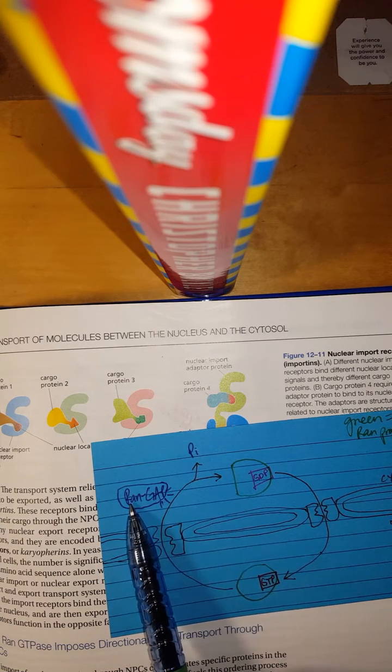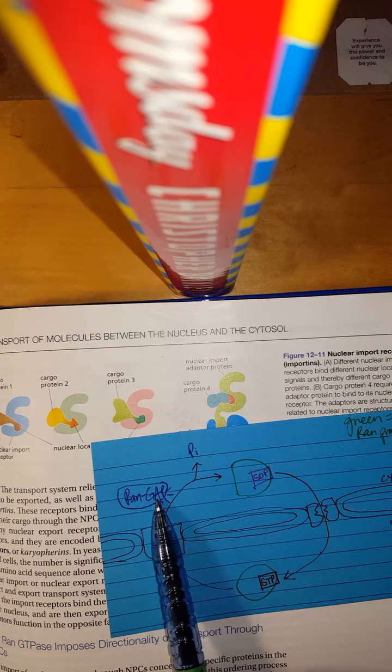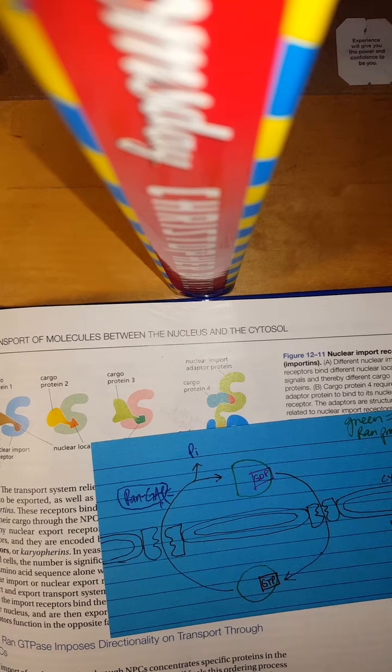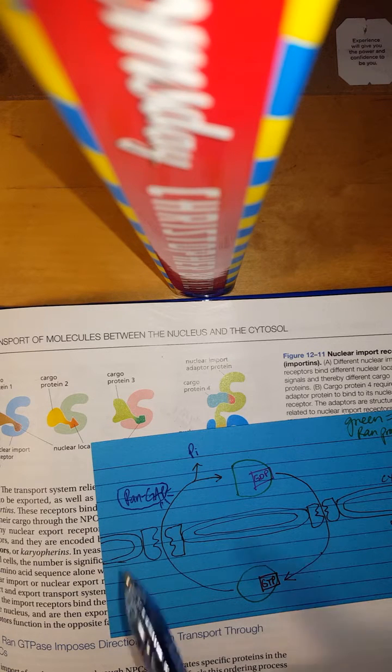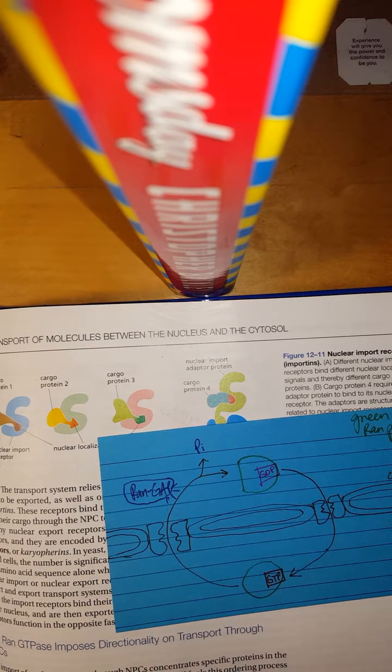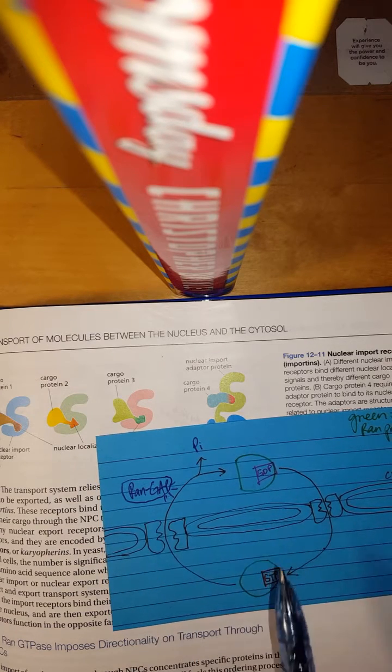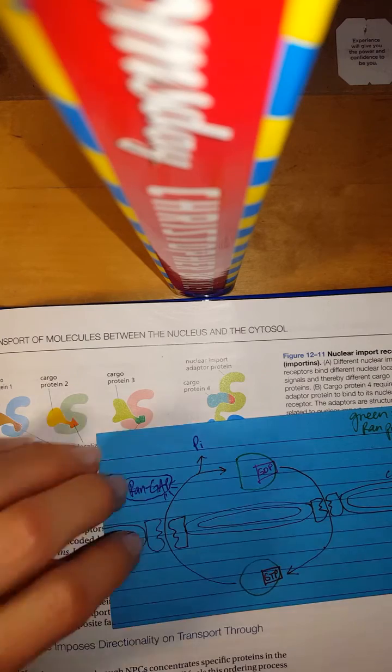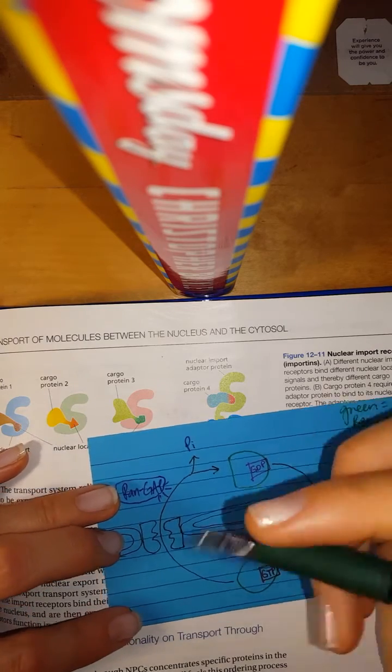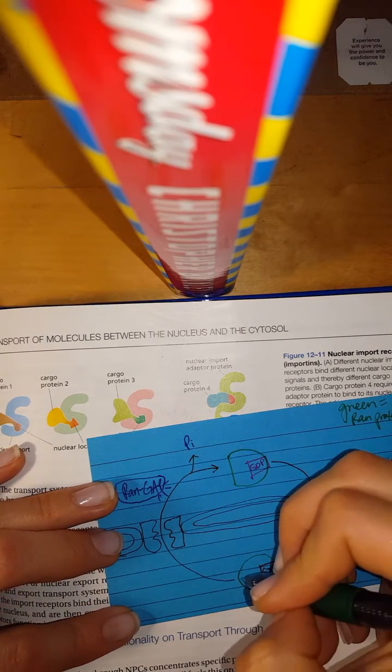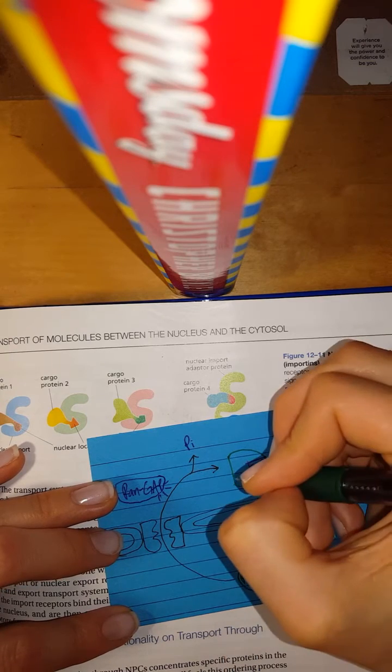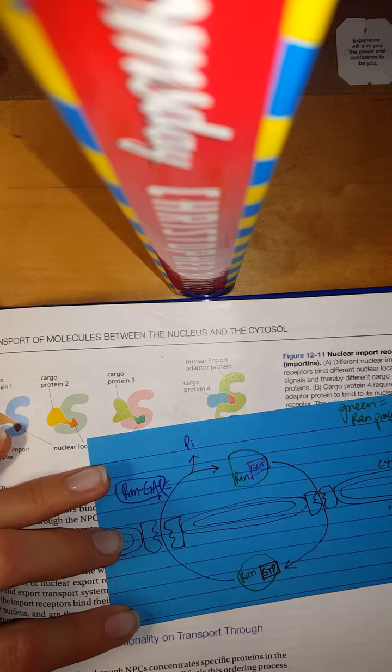Because here where it says RAN GAP, it's saying what kind of gap is it? So, it's a GTPase activating protein, but it's for RAN. Get it? So, this is not RAN. This is RAN. This is not RAN. These green thingies are RAN. So, this is RAN GTP.